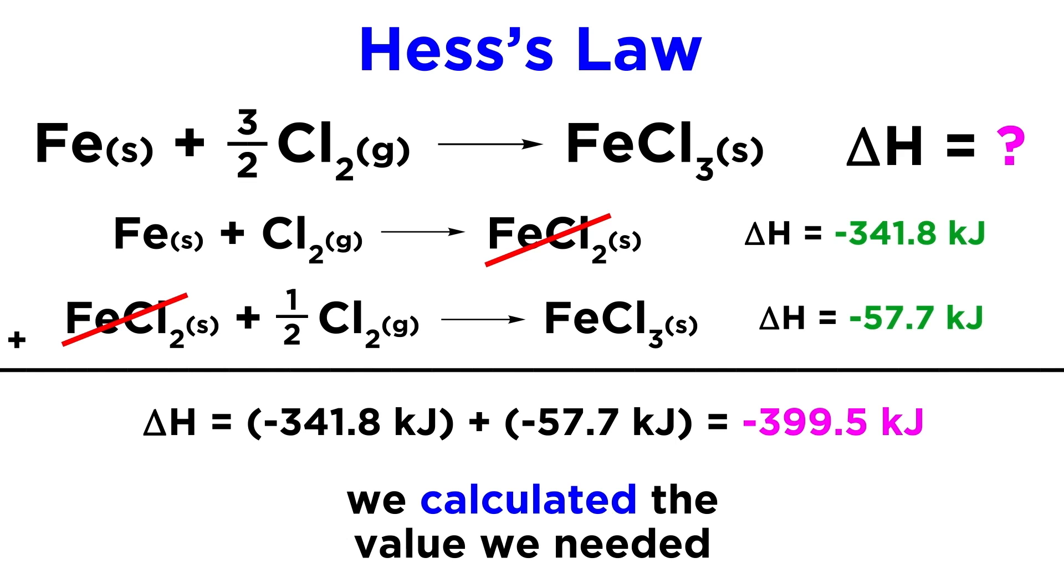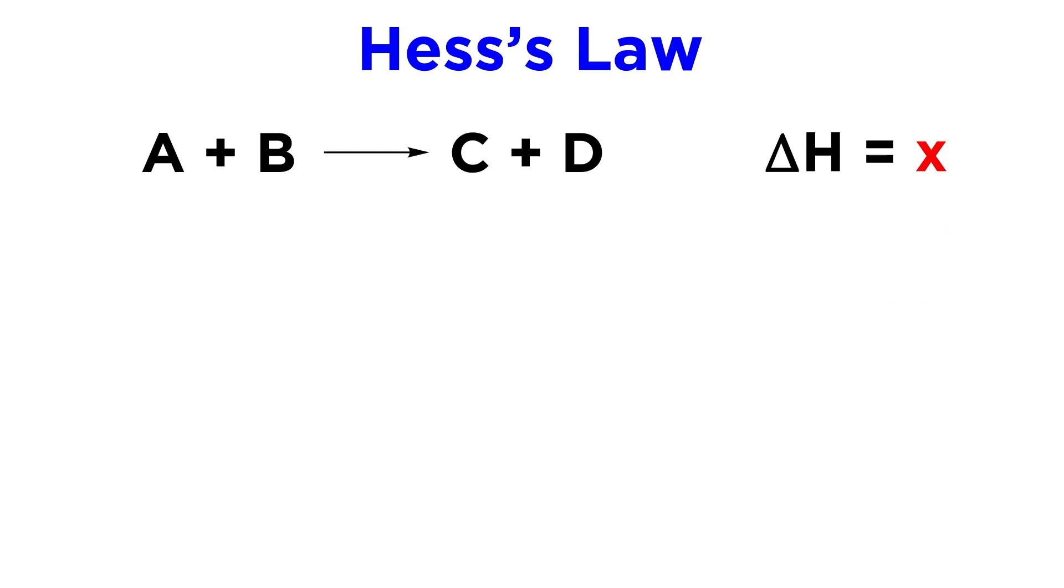Now it won't always be as easy as just adding two equations together, sometimes we need to manipulate them first, so let's understand some rules. First, if we have a chemical equation and we multiply or divide the stoichiometric coefficients by some number, we must multiply or divide the corresponding delta H by that same number.